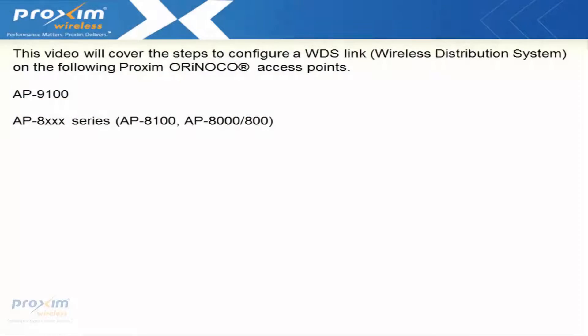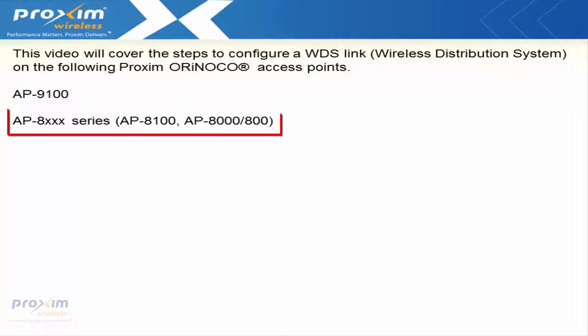This video will cover the steps to configure a WDS-Link wireless distribution system on the following Proxim Orinoco access points: the AP9100 and the AP8000 series, which includes the AP8100 and AP8000.